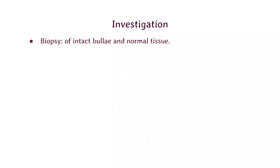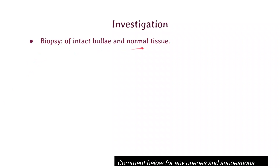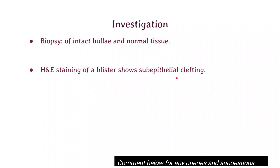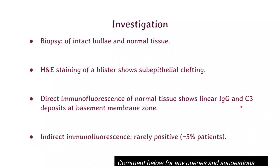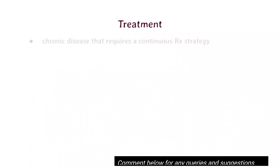For investigations, biopsy of intact bullae and normal tissue is done. H&E staining of the blister shows sub-epithelial clefting. Direct immunofluorescence of normal tissue shows linear IgG and C3 deposits at the basement membrane zone — this is an important finding. Indirect immunofluorescence is rarely positive, in almost only five percent of cases.